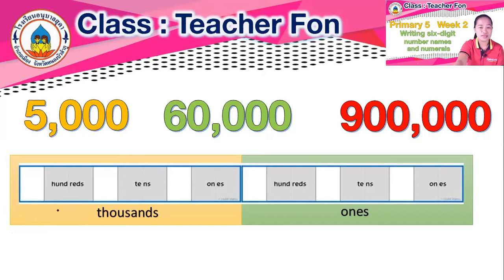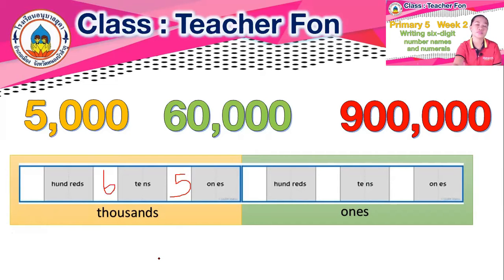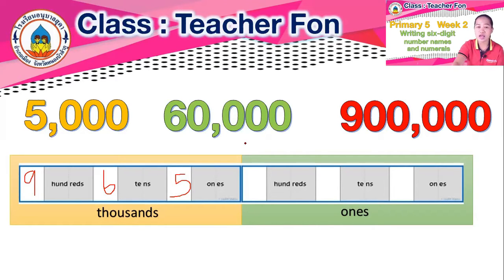Let's count the zeros to find the position. One, two, three, four — it's in the fourth place, so we put number five here. Next one: one, two, three, four, five — so we put number six here. And for the last one: one, two, three, four, five, six — we write down number nine here. And the ones digits are zero, so we write zero there.